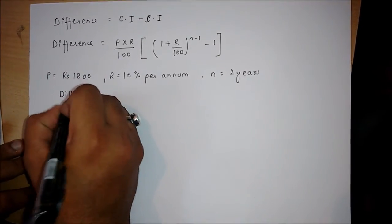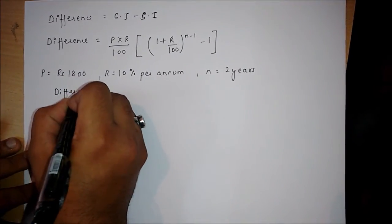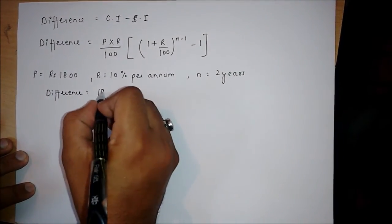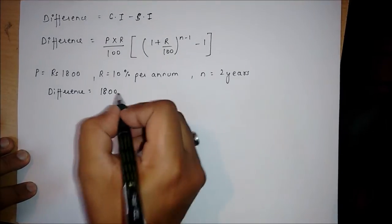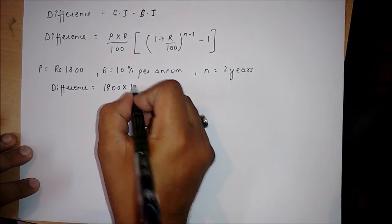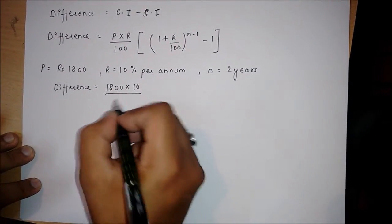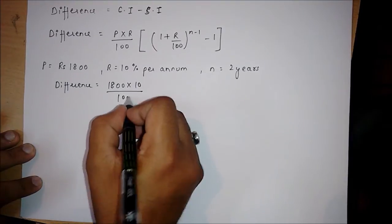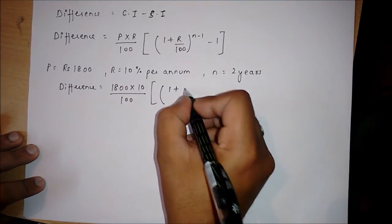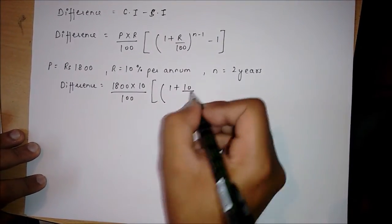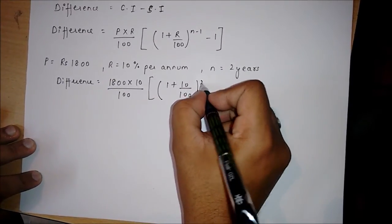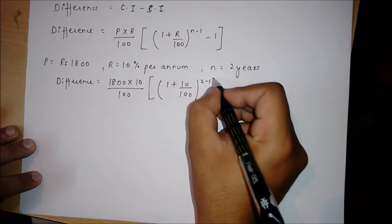We have a formula for the difference: 1800 multiplied by 10 divided by 100, bracket 1 plus 10 divided by 100 to the whole power 2, minus 1, minus 1.